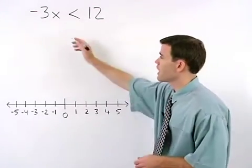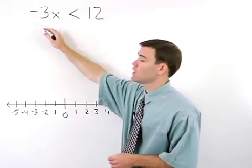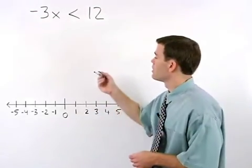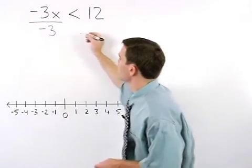In this problem, since x is being multiplied by negative 3 on the left side of the inequality, to get x by itself, we divide both sides by negative 3.